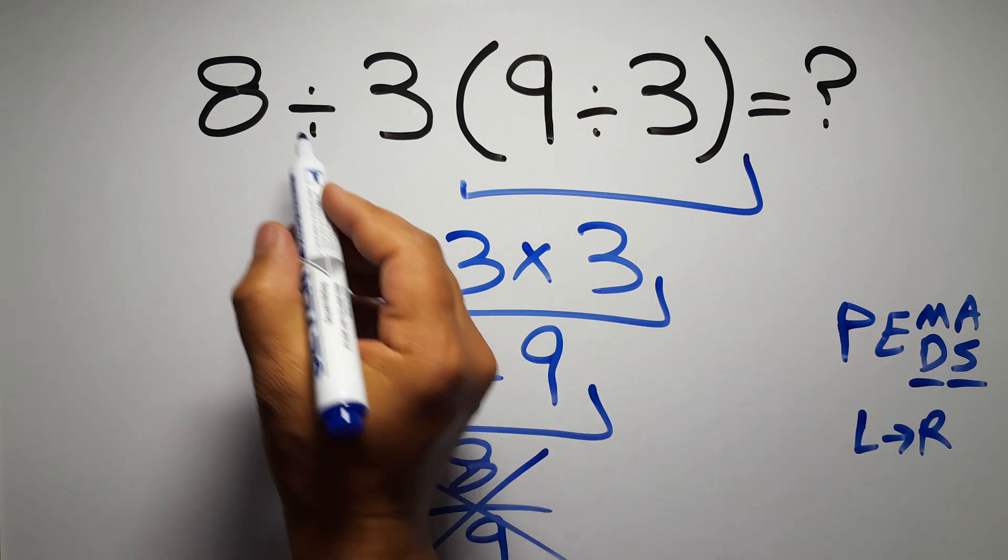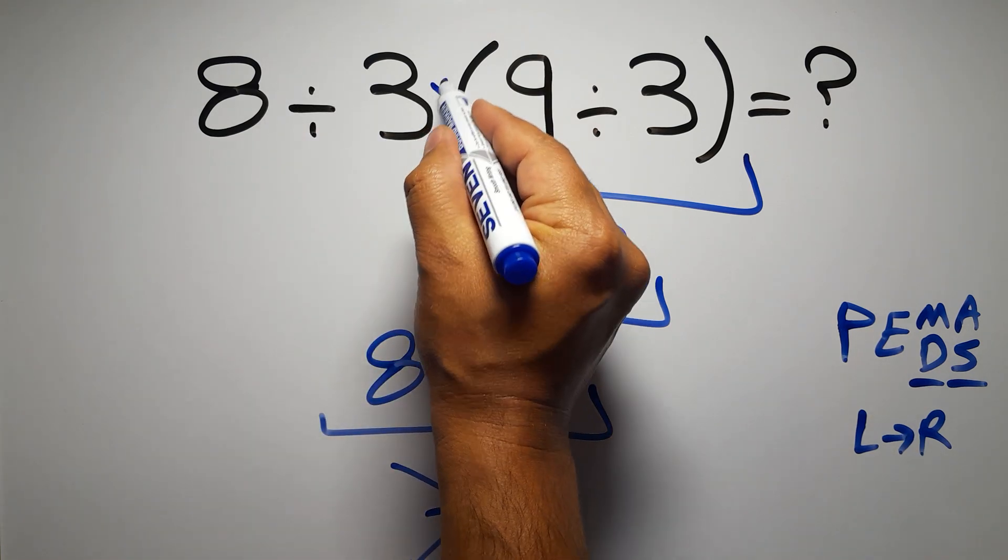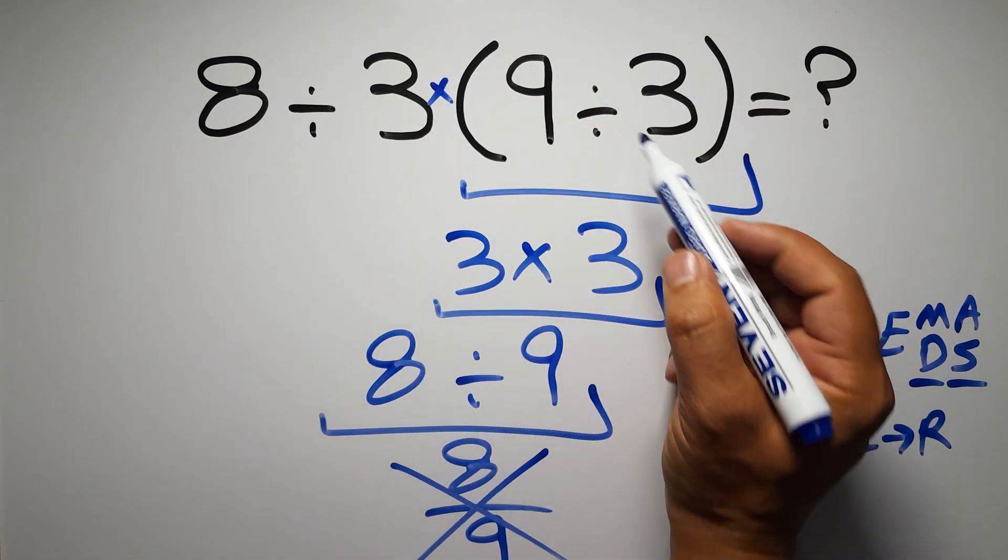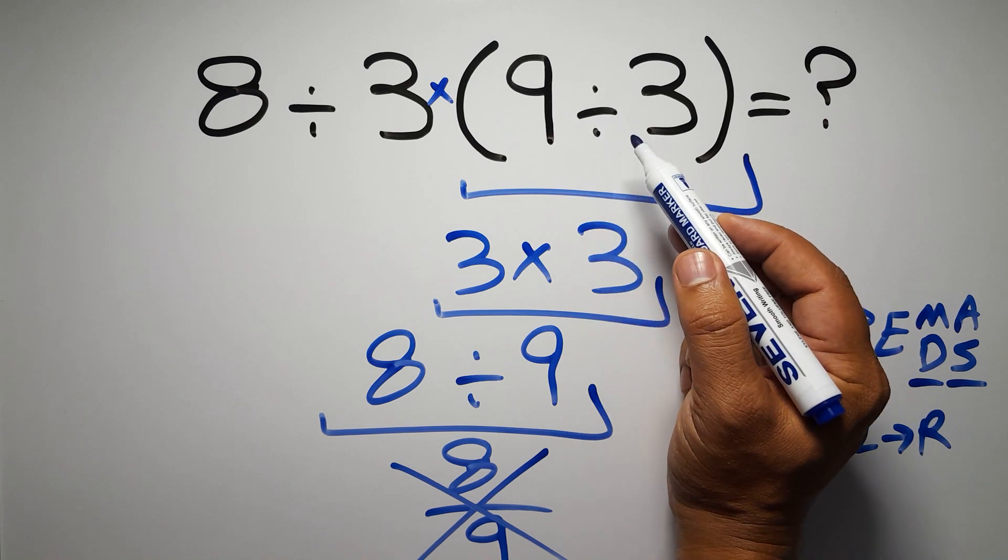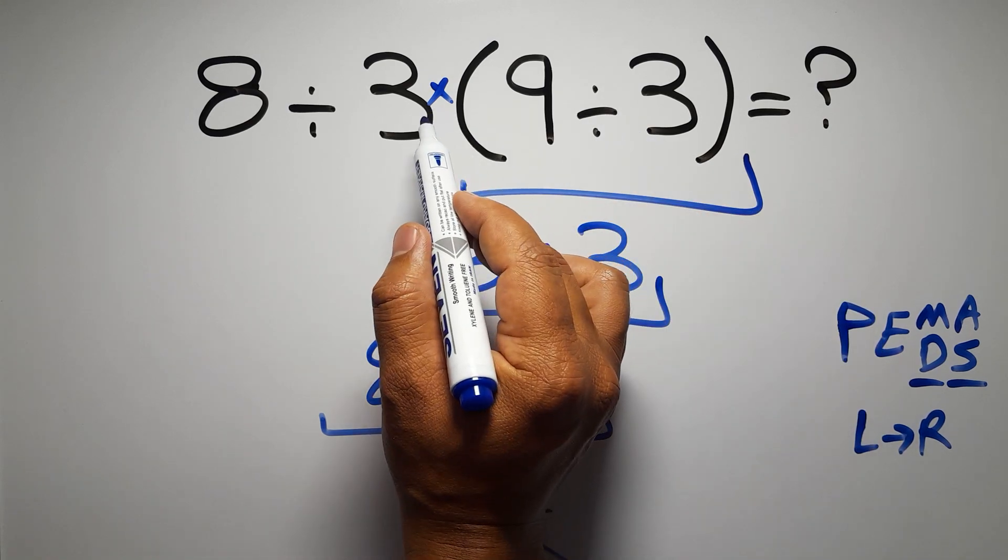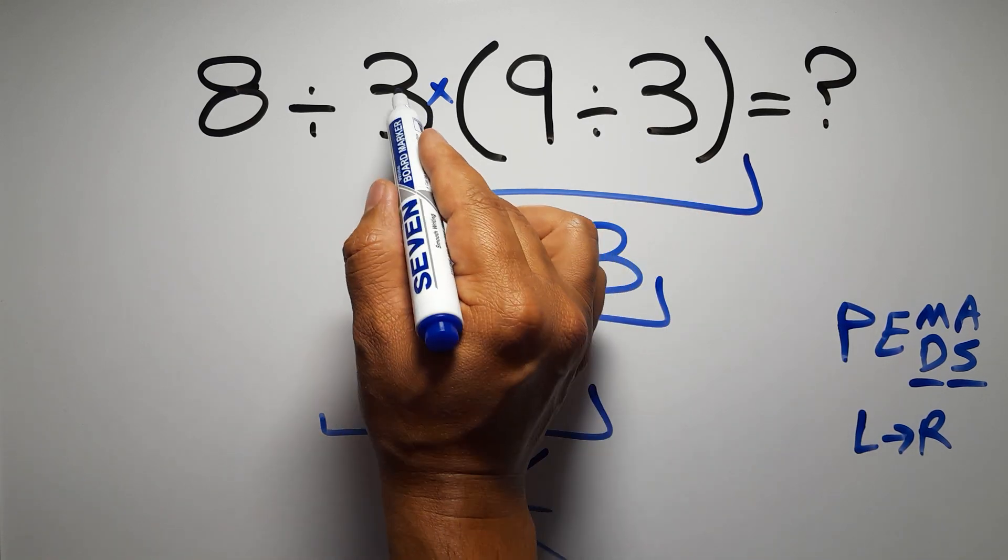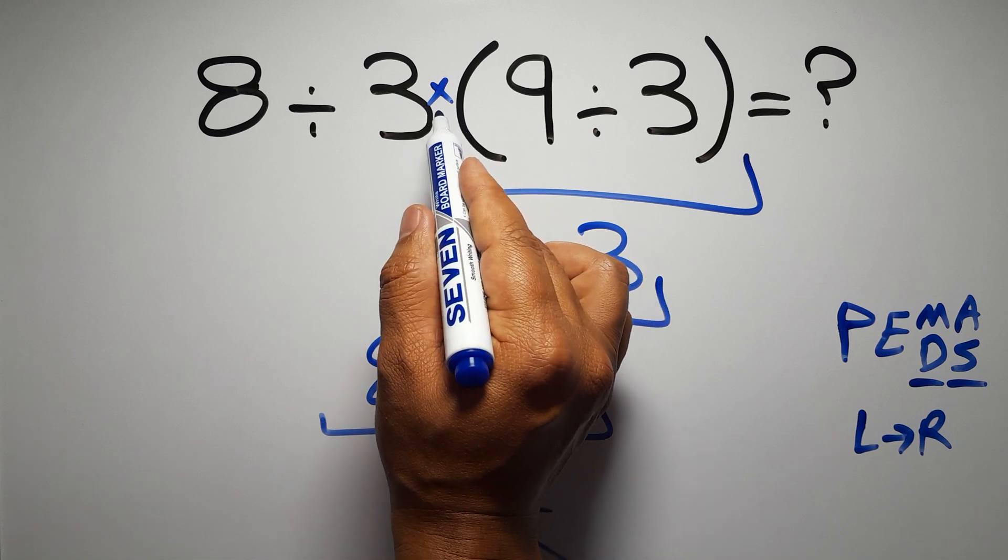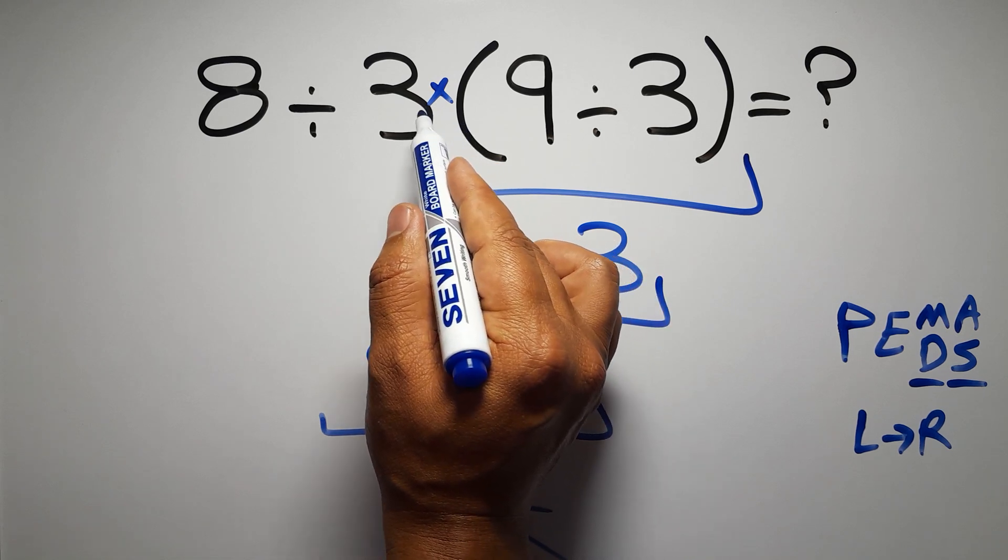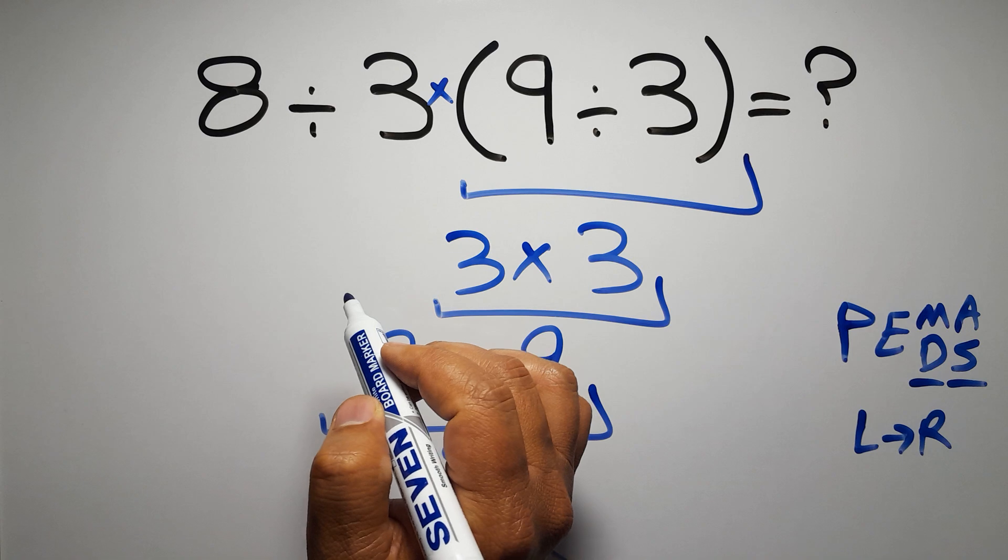In this expression, we have one division, one multiplication, and one parentheses. Inside these parentheses, we have one division. Here, we have a multiplication, because in mathematics, when a number is placed next to parentheses, it means multiplication, and we usually don't write the multiplication sign for brevity.